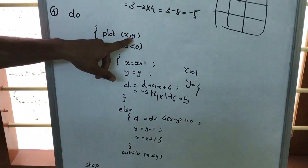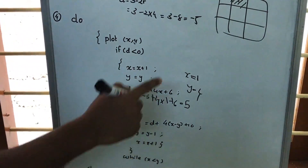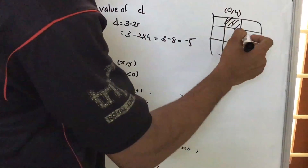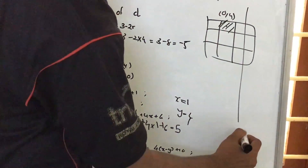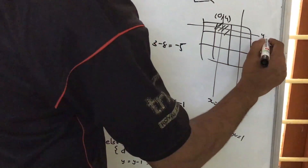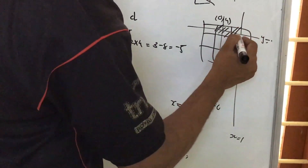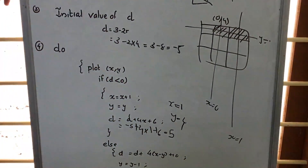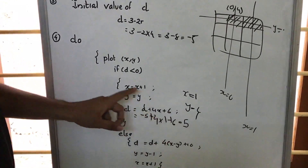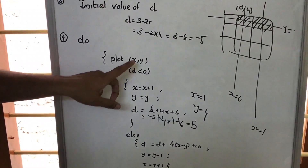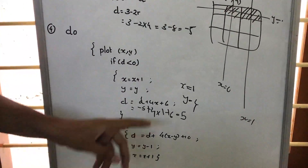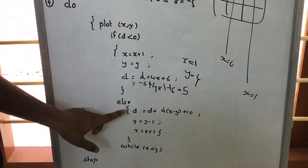In the do loop, the first step is plot (x, y). Now x is 1, y is 4. Previously x was 0, so the next pixel is at x equal to 1, y equal to 4 — we have plotted that pixel. Now, if d is less than 0: our present value of d is 5, which is greater than 0, so we cannot enter that branch.